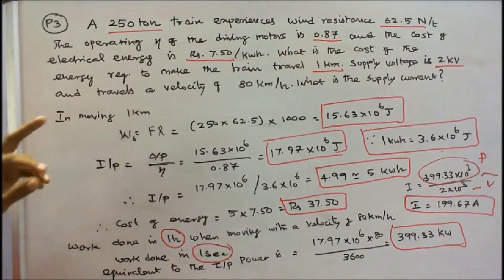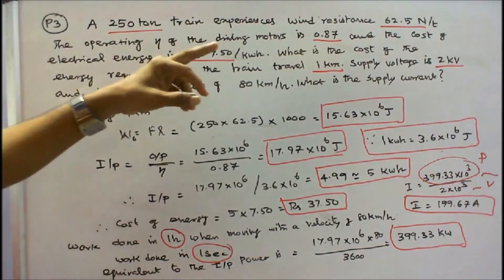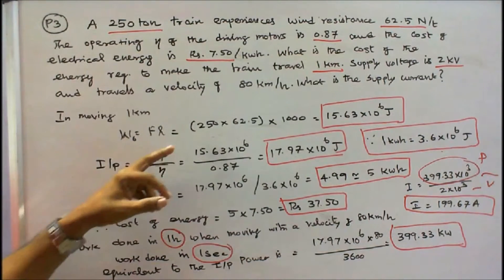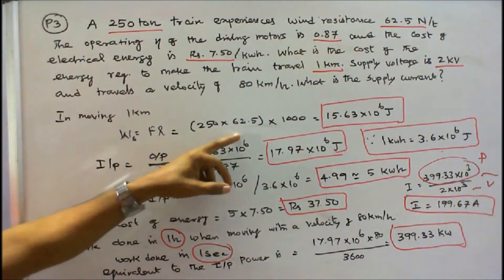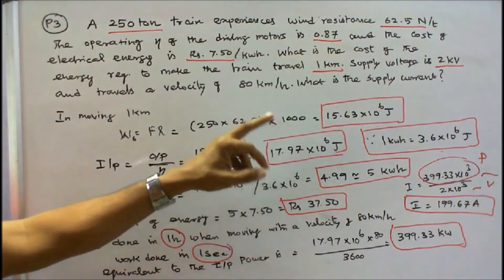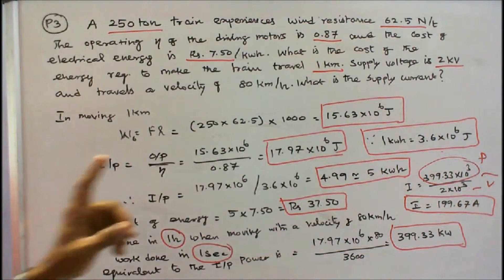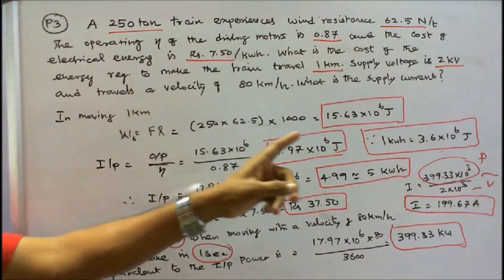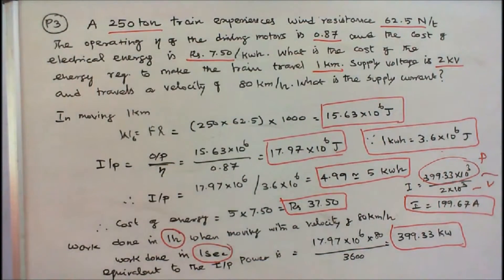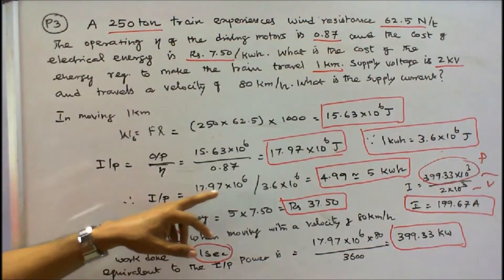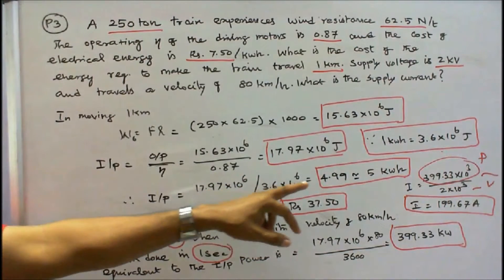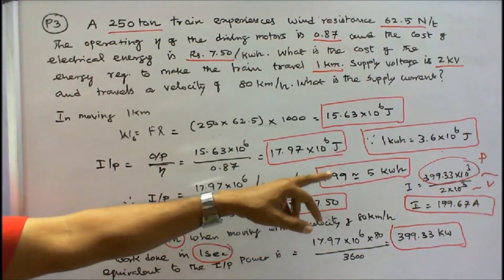We know the output and we can find the input. Efficiency is given as 0.87, so input equals output by efficiency: 15.63 into 10⁶ divided by 0.87, that is equal to 17.97 into 10⁶ joules. Since 1 kWh equals 3.6 into 10⁶ joules, input is 17.97 into 10⁶ divided by 3.6 into 10⁶, which is equal to 4.99, nearly 5 kWh.